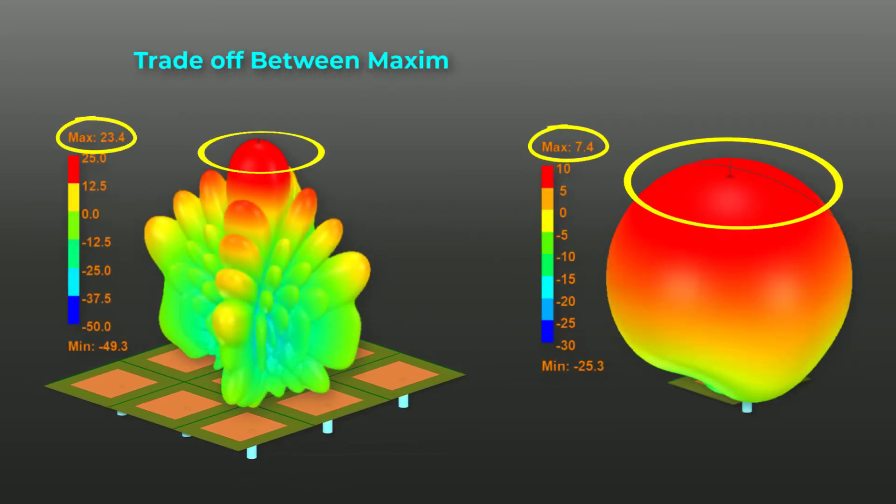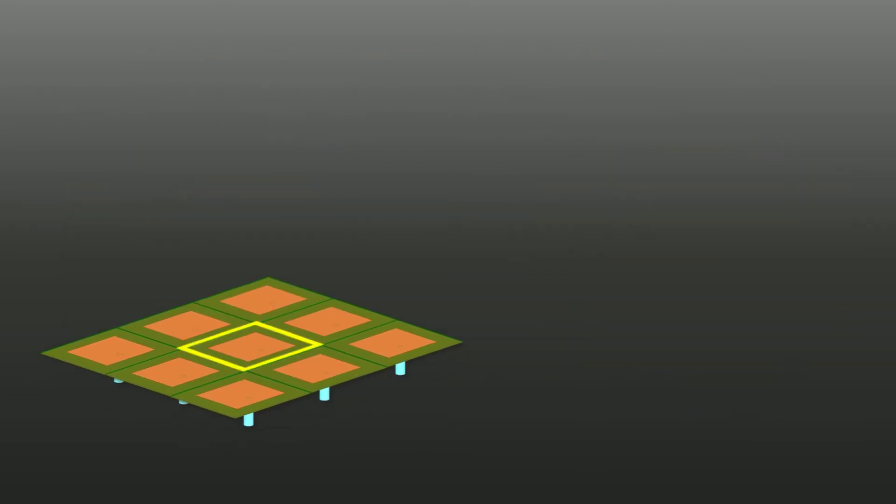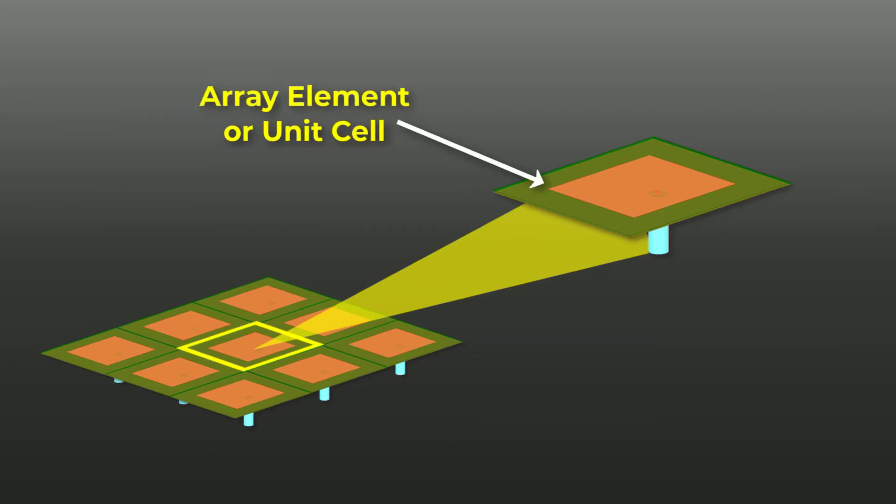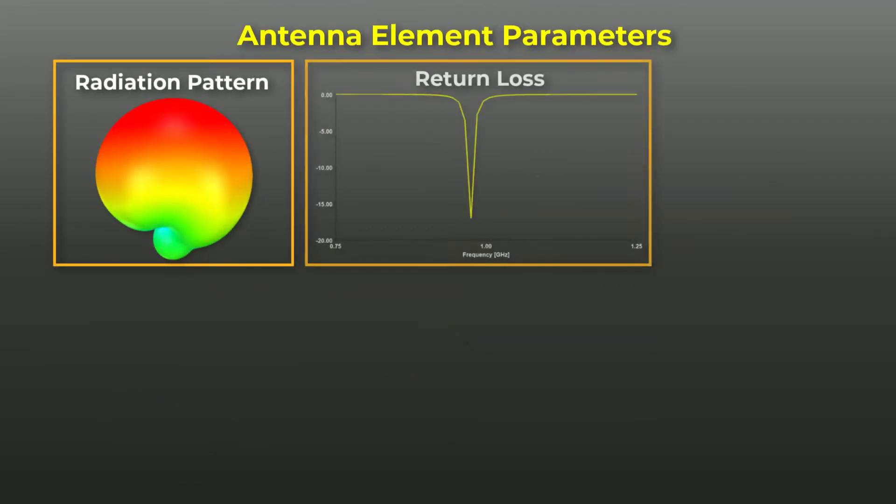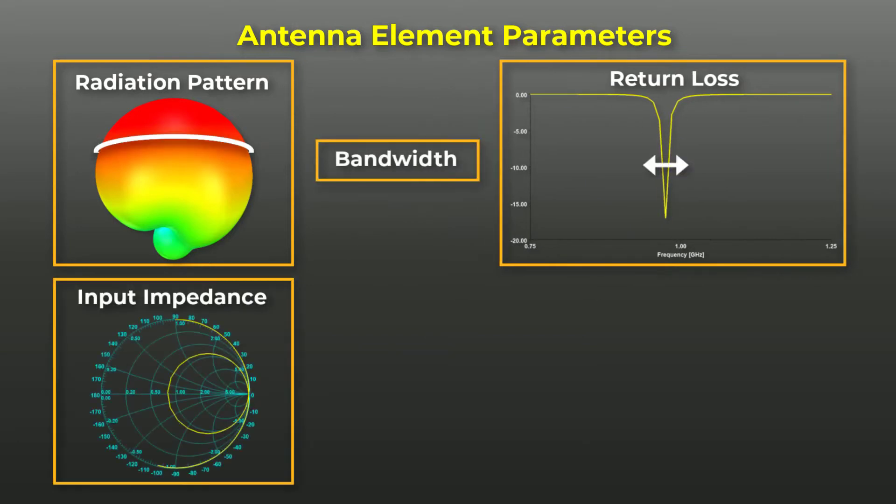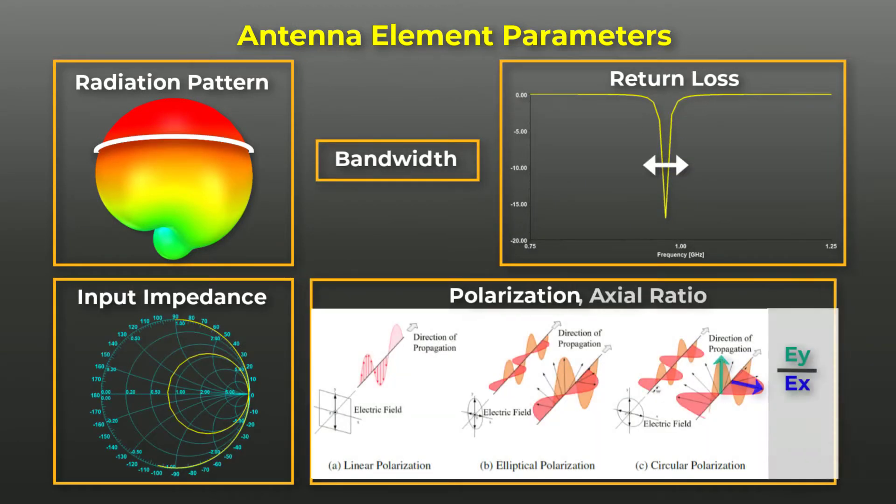From our previous video, we considered the array element parameters such as radiation or gain, the return loss, bandwidth and input impedance, polarization, and the axial ratio.